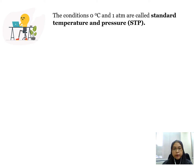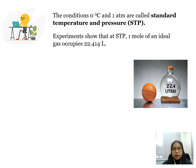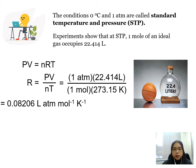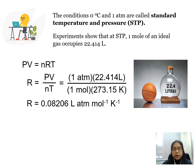So what is the value of R? Let's take the condition of 0 degrees Celsius and 1 atm — standard temperature and pressure. The volume of 1 mol of ideal gas is 22.414 litres. Substituting these values in PV equals to nRT gives us R equals to 0.08206 litre atm per mol per kelvin.